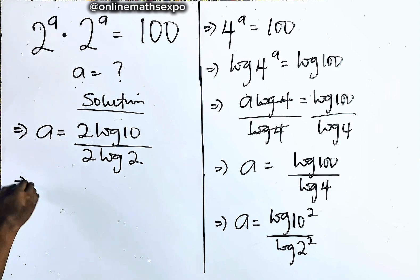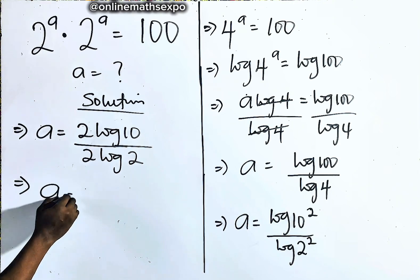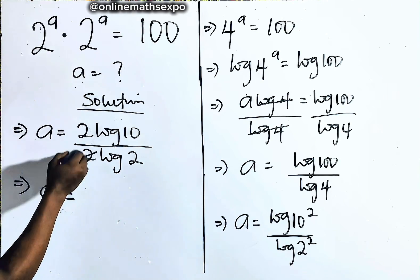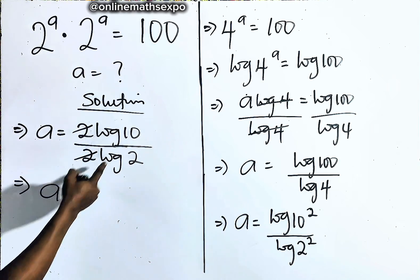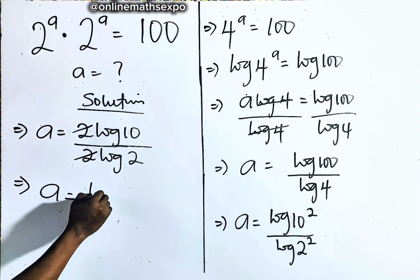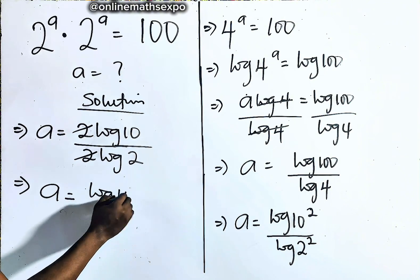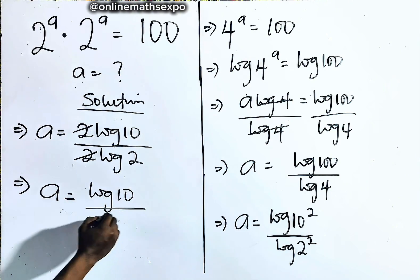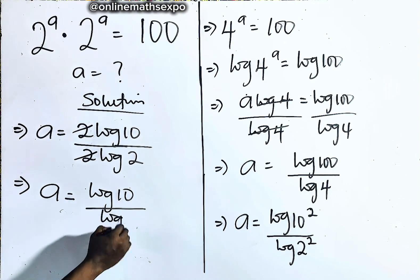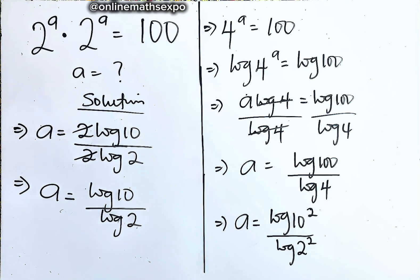The 2s cancel out, giving us a is equal to log of 10 divided by log of 2.